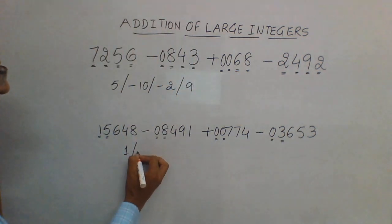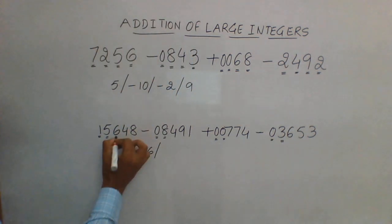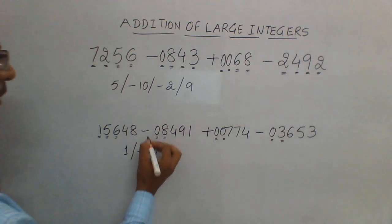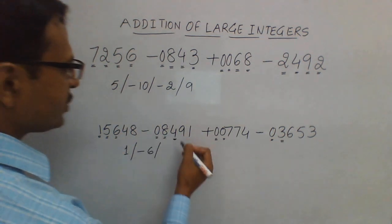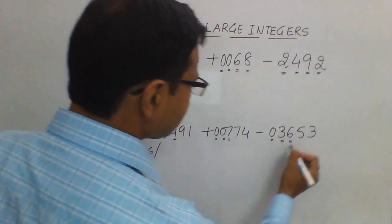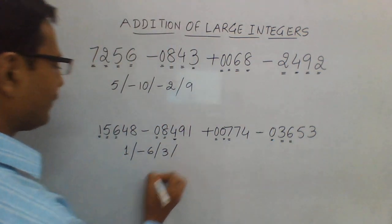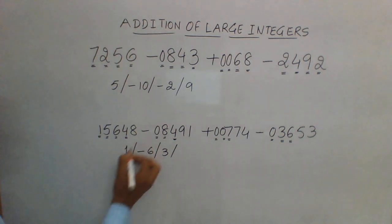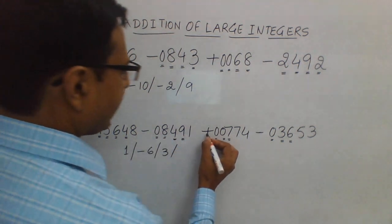Then we have 6 minus 4, which is 2, 2 plus 7 is 9, 9 minus 6 is 3. Next, 4 minus 9 is minus 5, minus 5 plus 7 plus 2 minus 5 is minus 3.